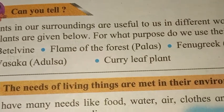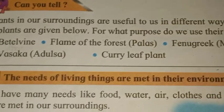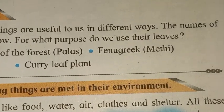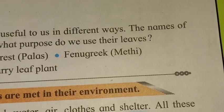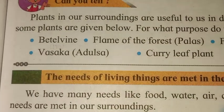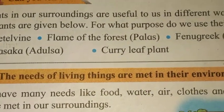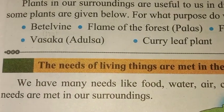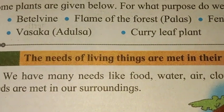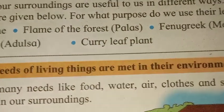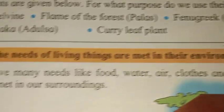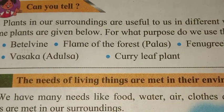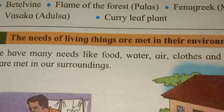Plants jo hamare surrounding hain woh hum log ko different different ways mein useful hain. Koi humein medicinal properties mein help karta hai, koi humein food mein help karta hai. The names of some plants are given below — for what purposes do we use their leaf? Plants like betel vine, flame of forest, fenugreek (methi), vasaka (adulsa), curry leaf plant — kai isme medicinal plant hain, kai hum log food mein use karte hain.